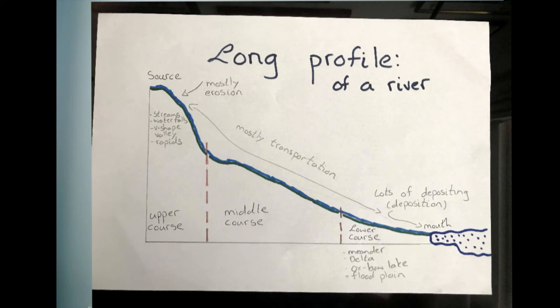By the lower course, this is where the land is starting to level out. As the land levels out, the river doesn't have the same amount of energy. Because it hasn't got the same amount of energy, it starts to deposit a lot more soil, and this affects the route the river takes, causing features such as oxbow lakes, floodplains, and deltas.